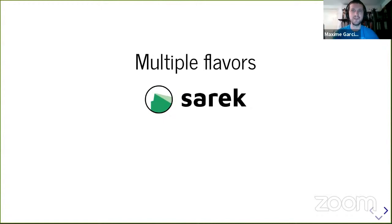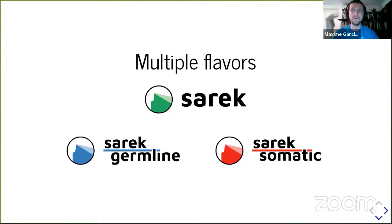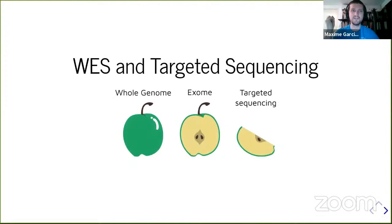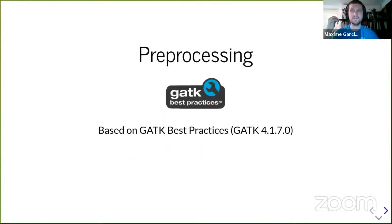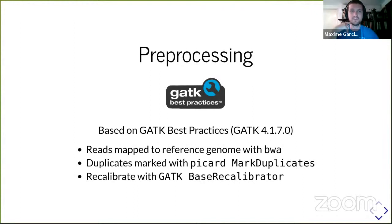SARIC has multiple flavors: you can analyze a normal sample with just the germline part, or you can analyze a tumor-normal pair with SARIC somatic. SARIC works for whole genome sequencing, whole exome sequencing, or targeted sequencing. For preprocessing, we follow the GATK best practice — the latest release follows GATK 4.1.7. We map reads to the reference genome with BWA, mark duplicates with Picard MarkDuplicates, and do base recalibration with the GATK BaseRecalibrator.